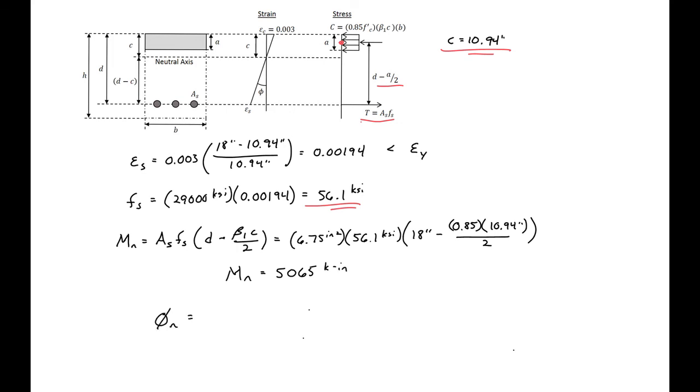We can also find our nominal curvature by taking our 0.003 divided by C, and we'll find our curvature at this point to be 2.74 times 10 to the negative 4th radians per inch.